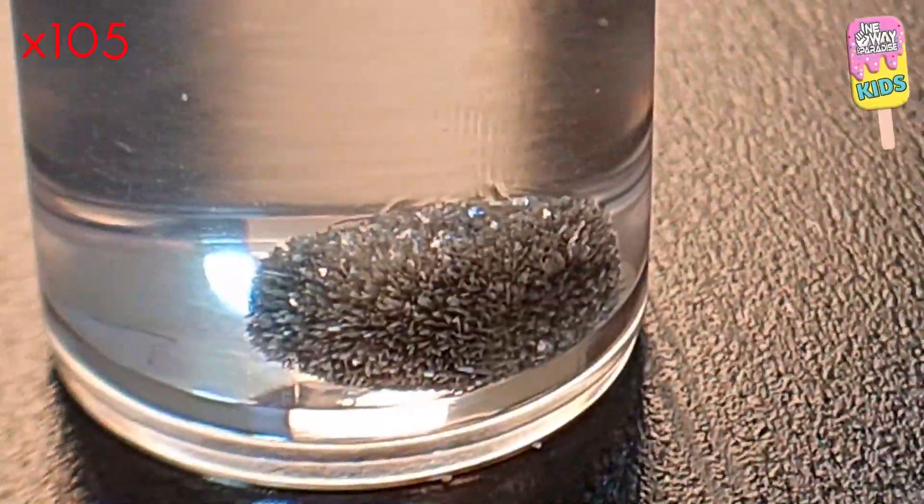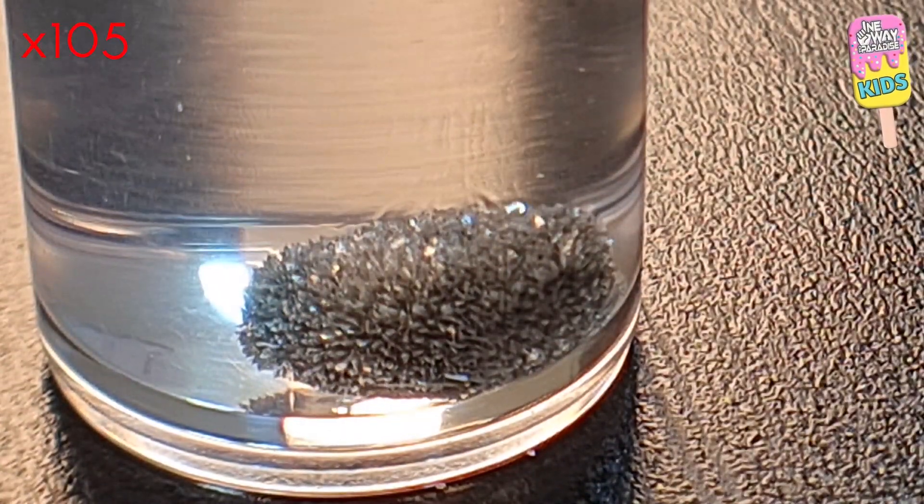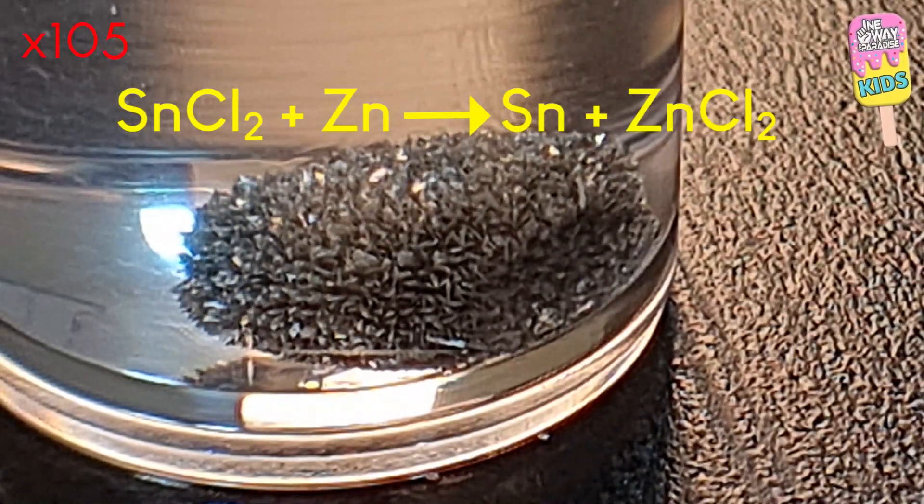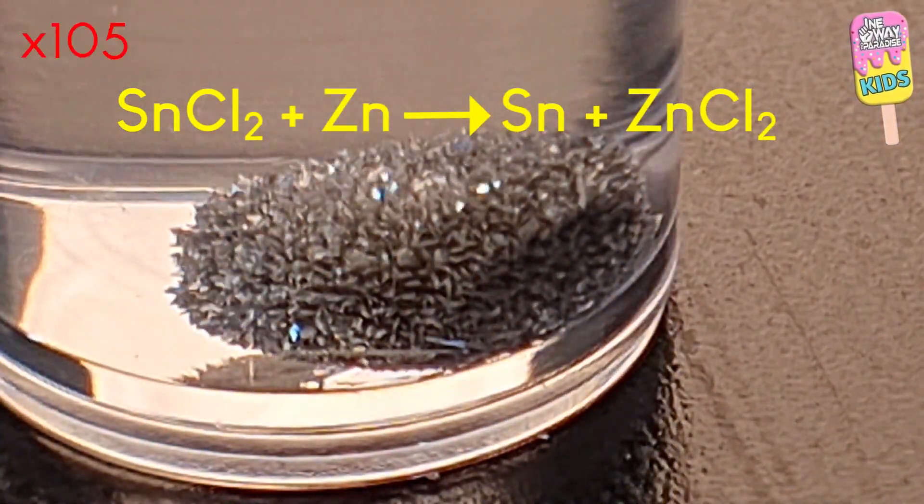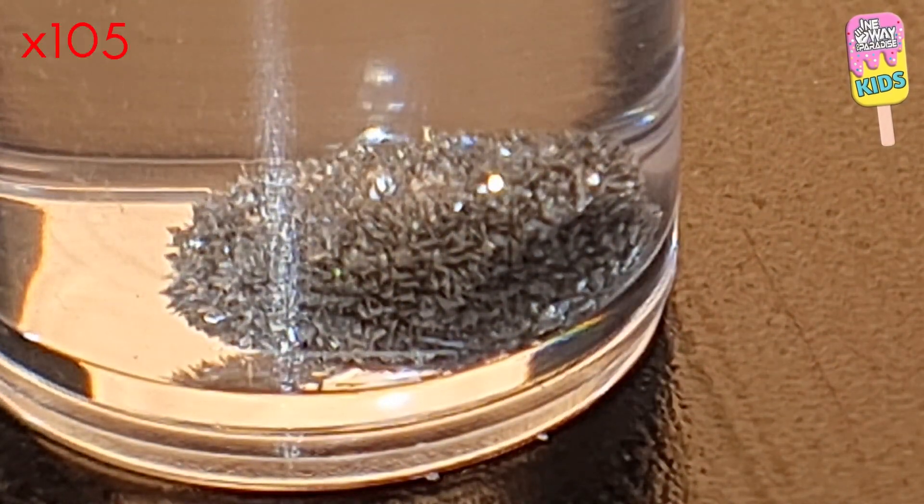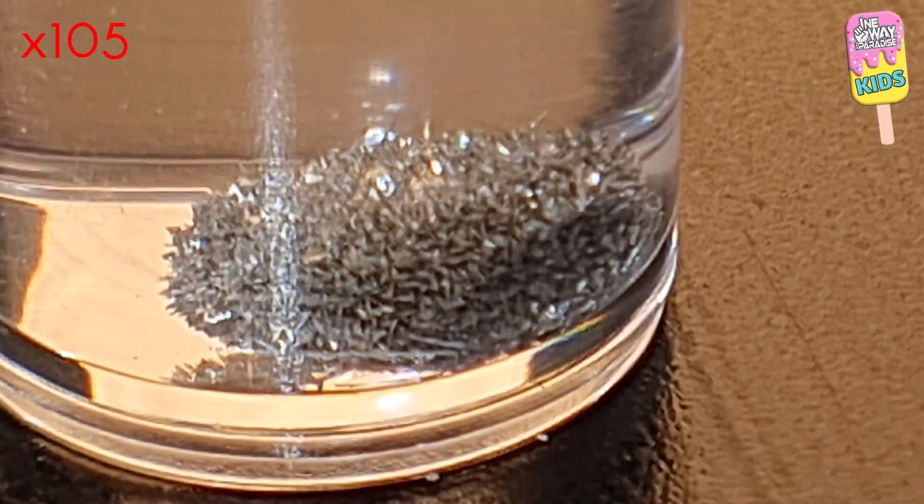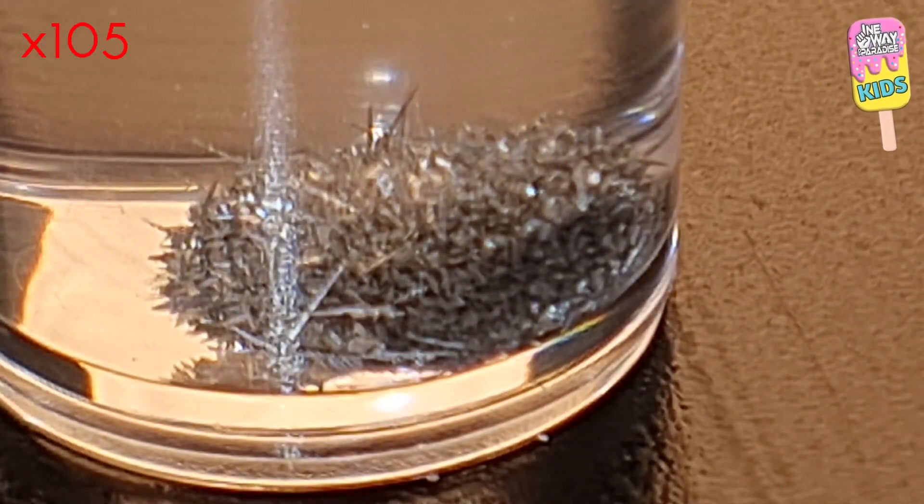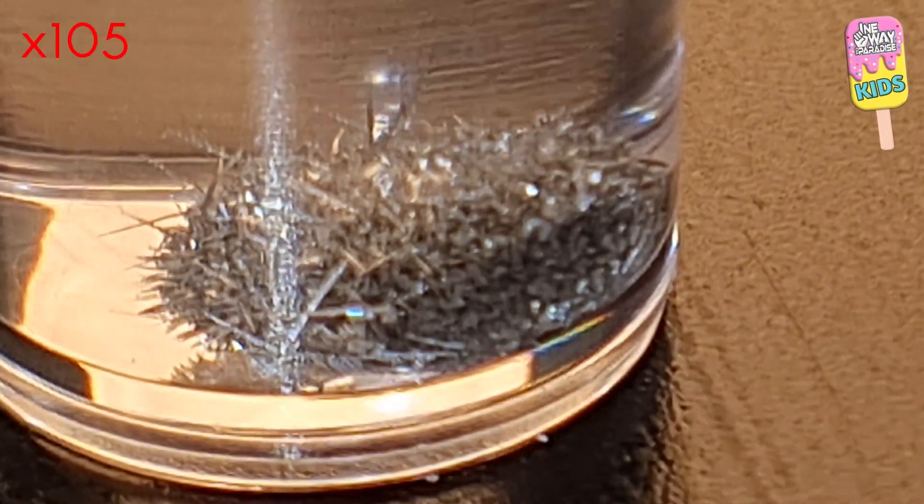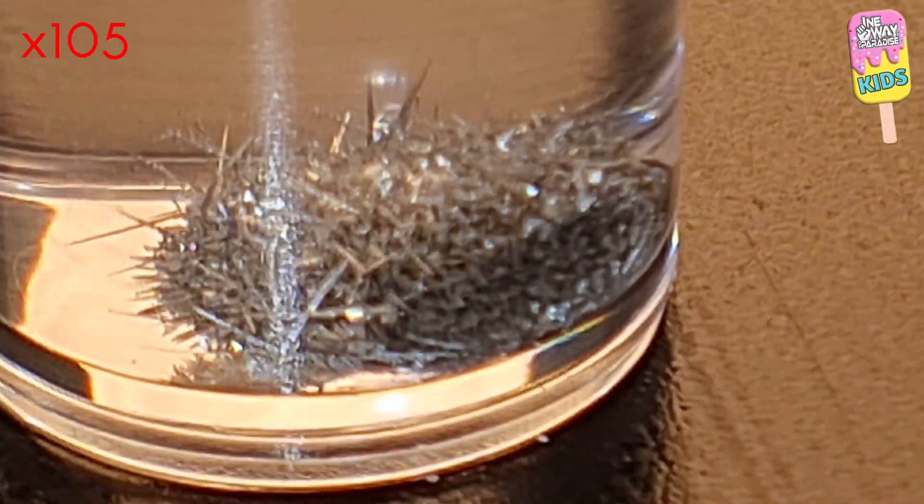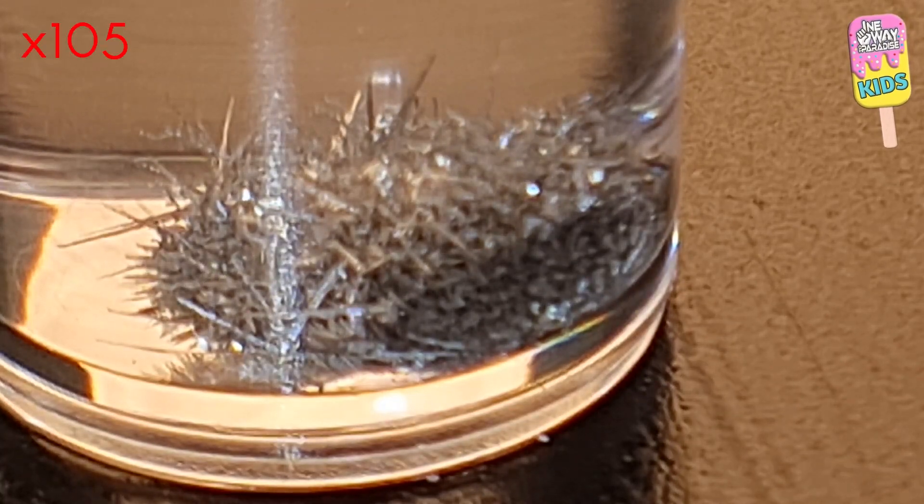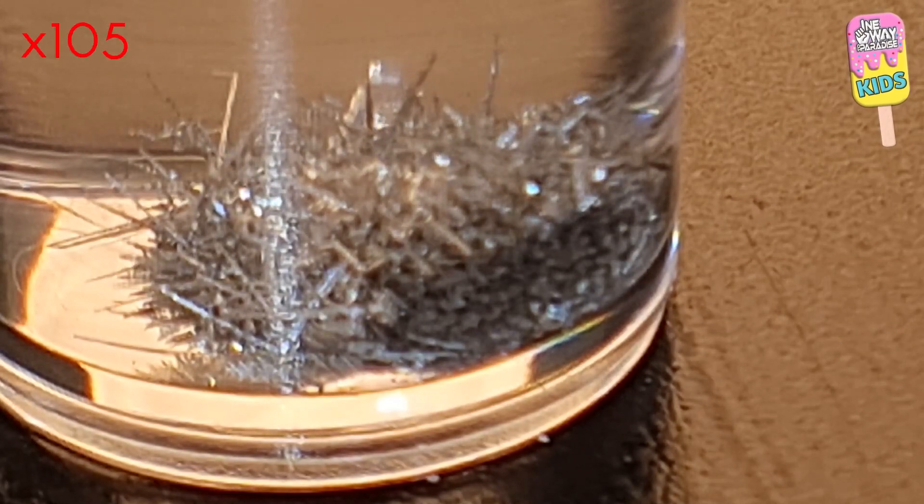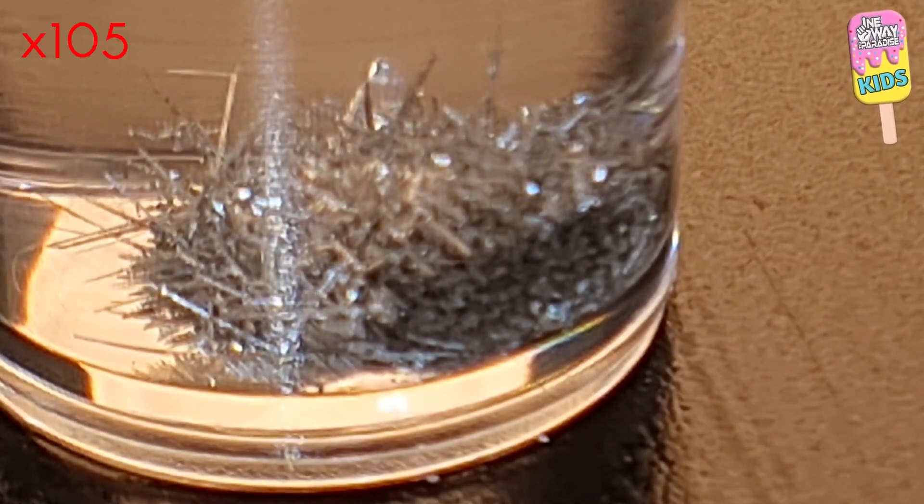When zinc is added to the tin chloride solution, the zinc pellet reacts with the tin chloride and the following reaction occurs. This is an example of a single displacement reaction. Zinc acts as a reducing agent, giving electrons to the tin chloride so that the tin precipitates, as in substances in it become solid and separate from the liquid or solution. The reaction begins at the surface of the zinc pellet and the tin precipitates or forms into solid from the solution as beautiful crystals in a process called crystallization.